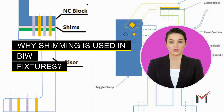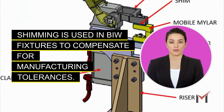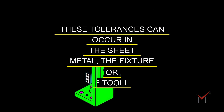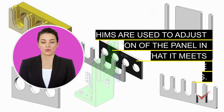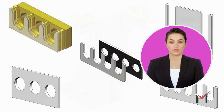Why shimming is used in BIW fixtures: shimming is used in BIW fixtures to compensate for manufacturing tolerances. These tolerances can occur in the sheet metal, the fixture, or the tooling. Shims are used to adjust the position of the panel in the fixture so that it meets the required tolerances.